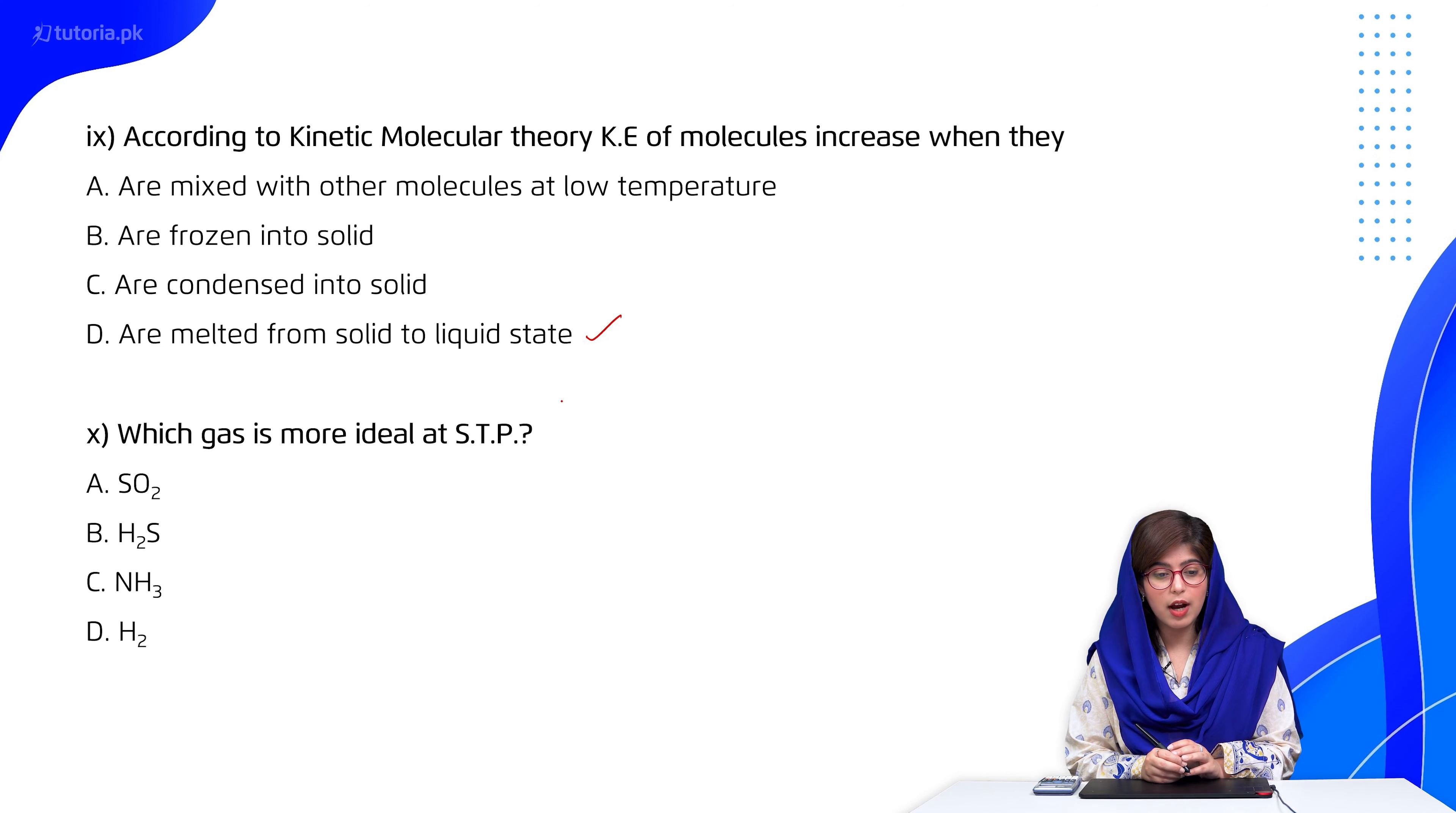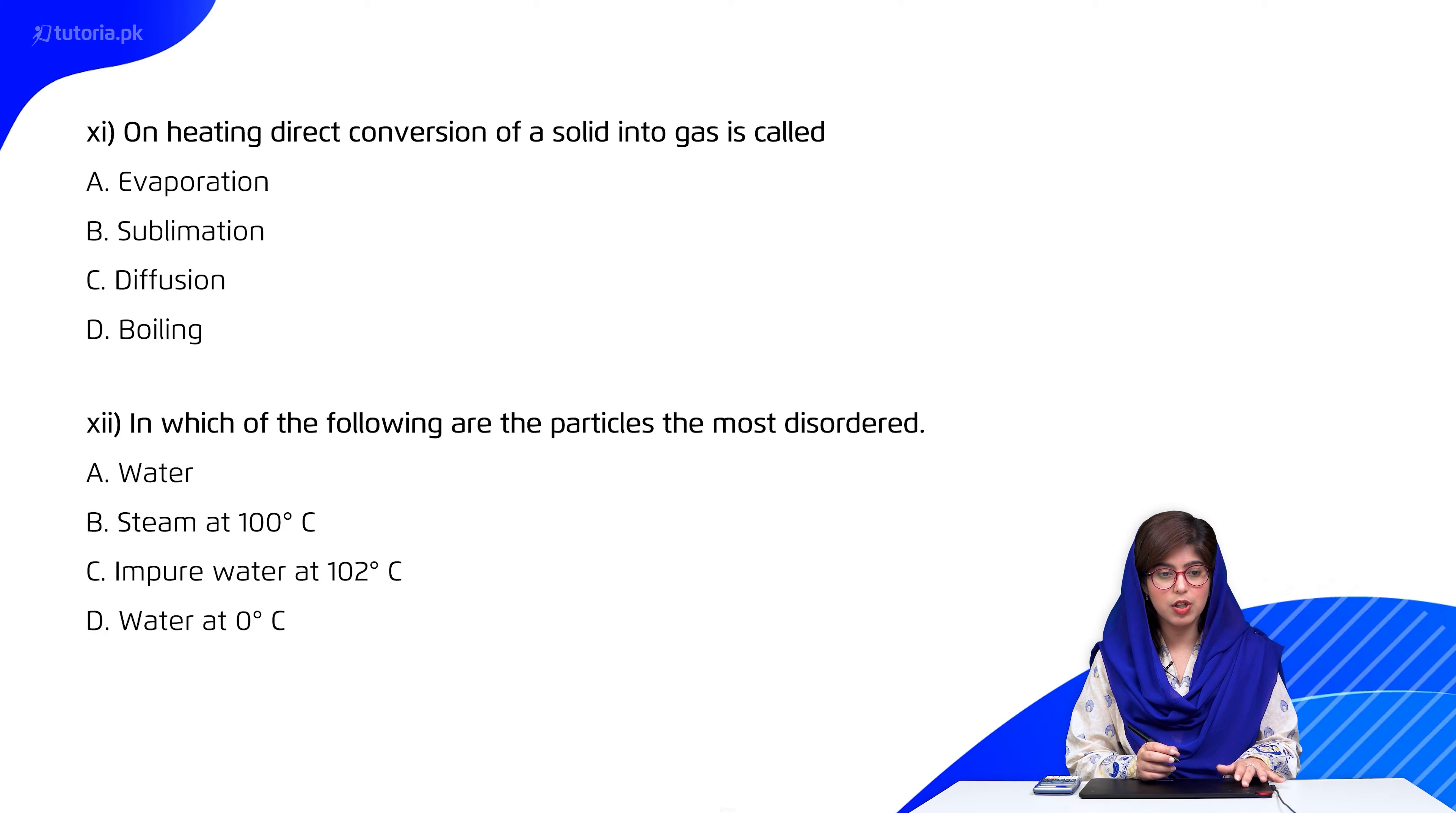Then which gas is more ideal at standard temperature and pressure? So students, I have mentioned in conceptual videos that those gas molecules which are smaller in size and molecular mass as compared to others, which have smaller Van der Waals constants, attraction coefficient and B effective coefficient, excluded volume, which have smaller values, show more ideality. So students, if you compare them, hydrogen would be more ideal at standard temperature and pressure.